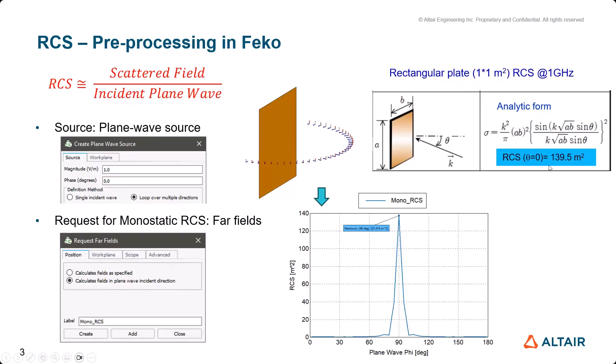If you use FEKO using plane wave source and far field request, FEKO gives you the RCS value here: 137.4, which is very similar to the analytic calculation.